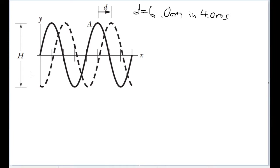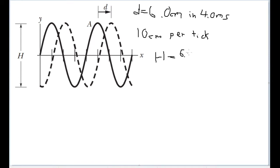The problem also tells us that the scale of the graph is given such that each tick mark along the x-axis is 10 centimeters — so that's 10 centimeters per tick mark. Not only that, but we're also given the total height of the wave, capital H, which is equal to 6.00 millimeters.